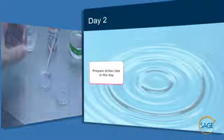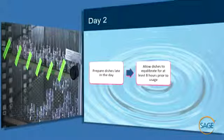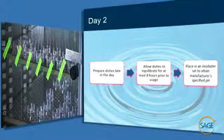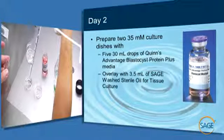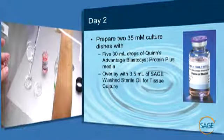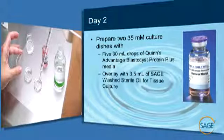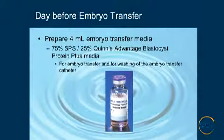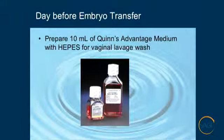On the afternoon of day two, dishes need to be prepared for extended culture. These dishes will need to equilibrate for at least eight hours prior to usage on day three, in an incubator set to attain the manufacturer's specified pH. The laboratory will need to prepare two 35 mm culture dishes with five 30-microliter droplets of Quinn's Advantage Blastocyst Plus Media overlaid with 3.5 ml of culture oil. Four milliliters of 75% SPS plus 25% Quinn's Advantage Blastocyst Medium will need to be prepared for washing catheters and the transfer of embryos. In addition, the laboratory will need to prepare 10 ml of Quinn's Advantage HEPES Media for vaginal lavage wash.